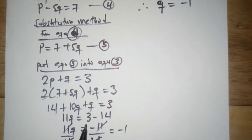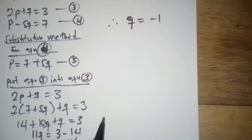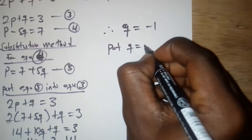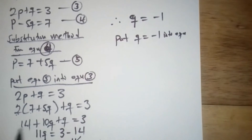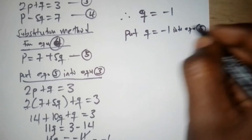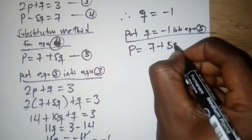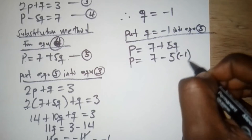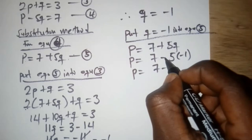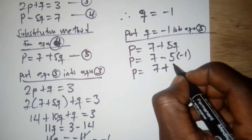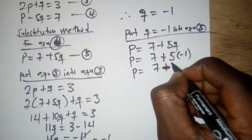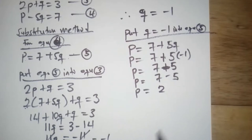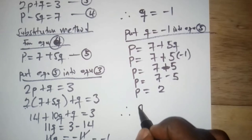Therefore q equals negative 1. Now we put q equal to negative 1 into equation 5. Equation 5 is p equals 7 plus 5q, so p equals 7 plus 5 times negative 1. That gives p equals 7 minus 5, so p equals 2. Therefore p is 2 and q is negative 1.